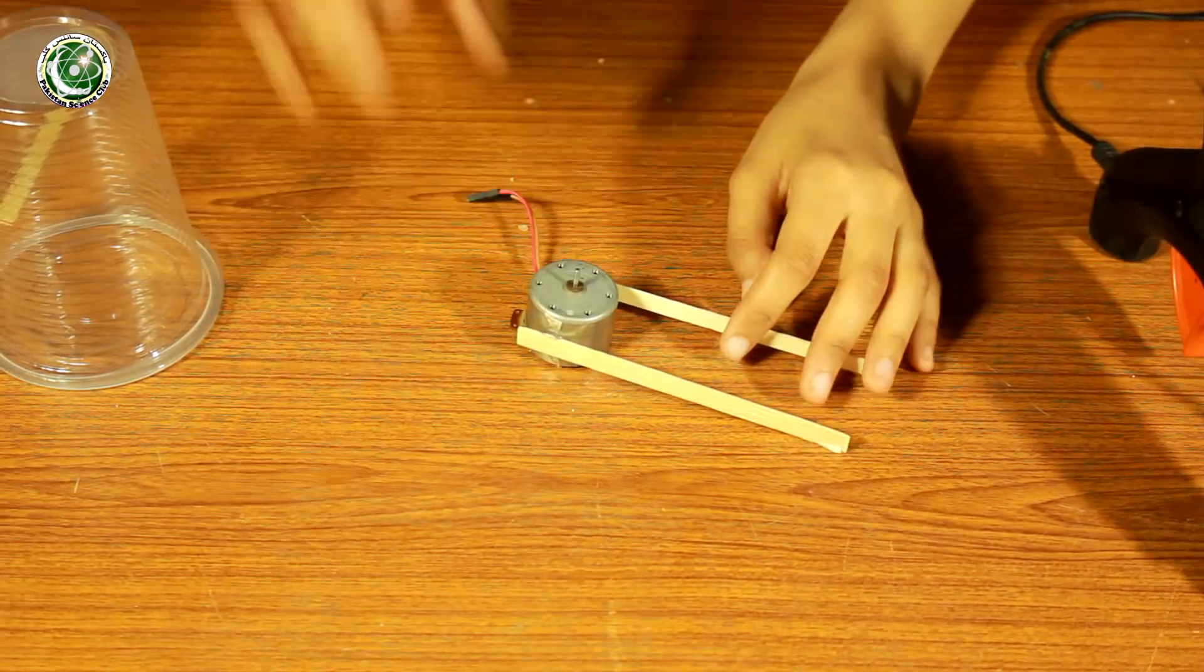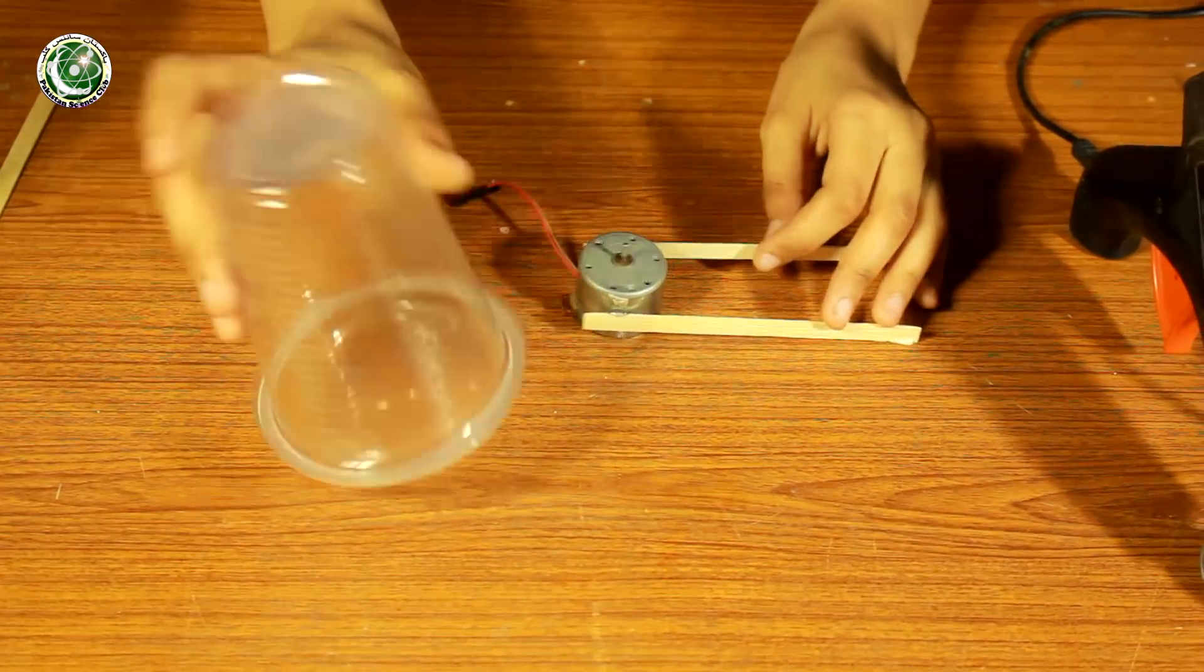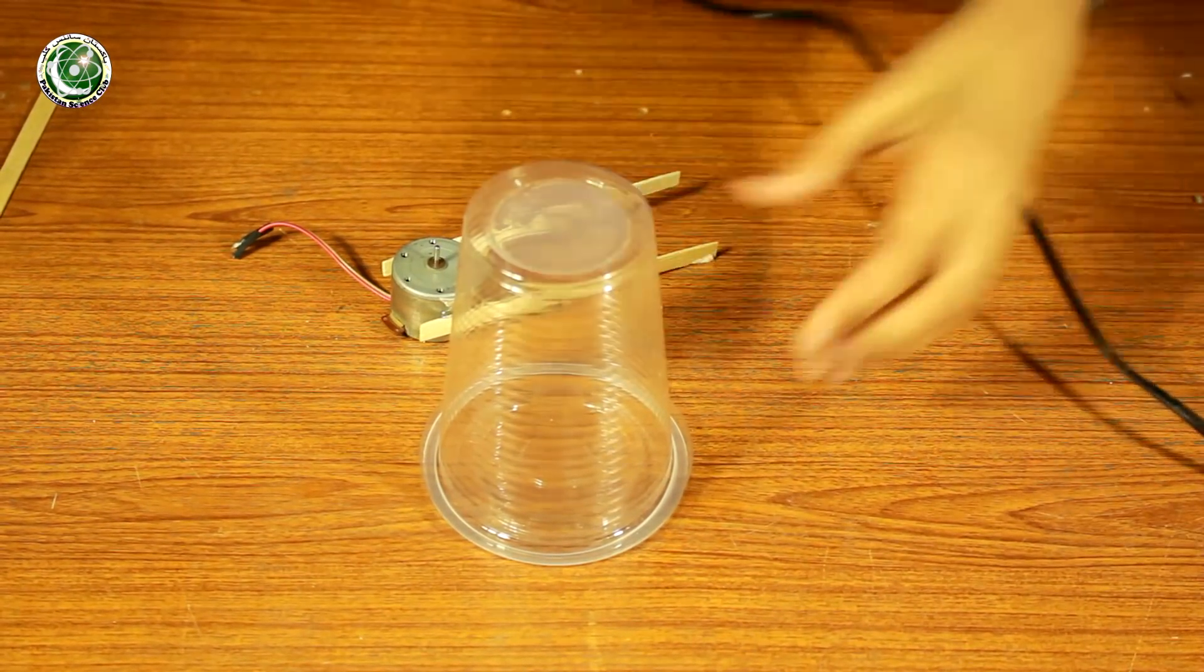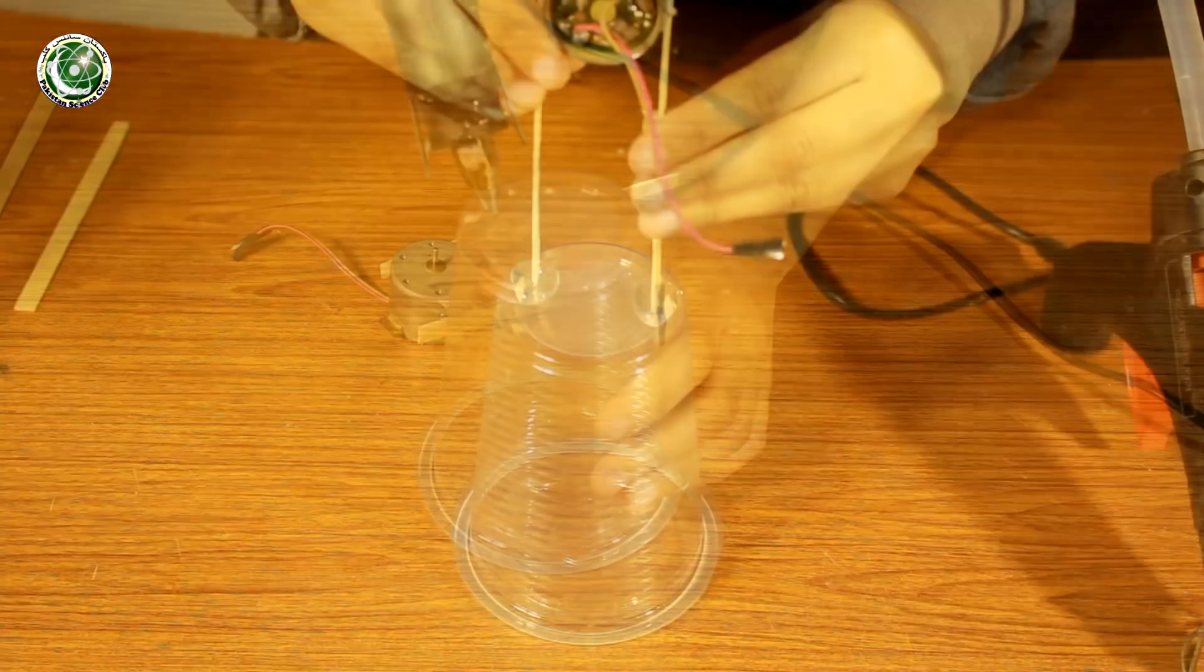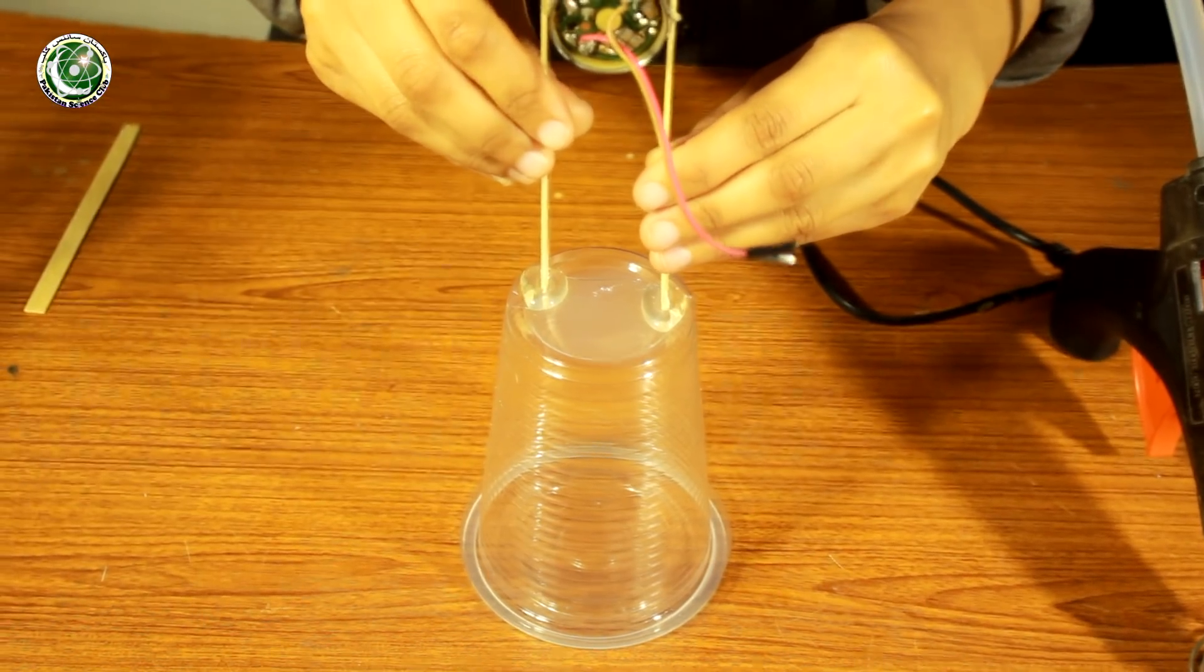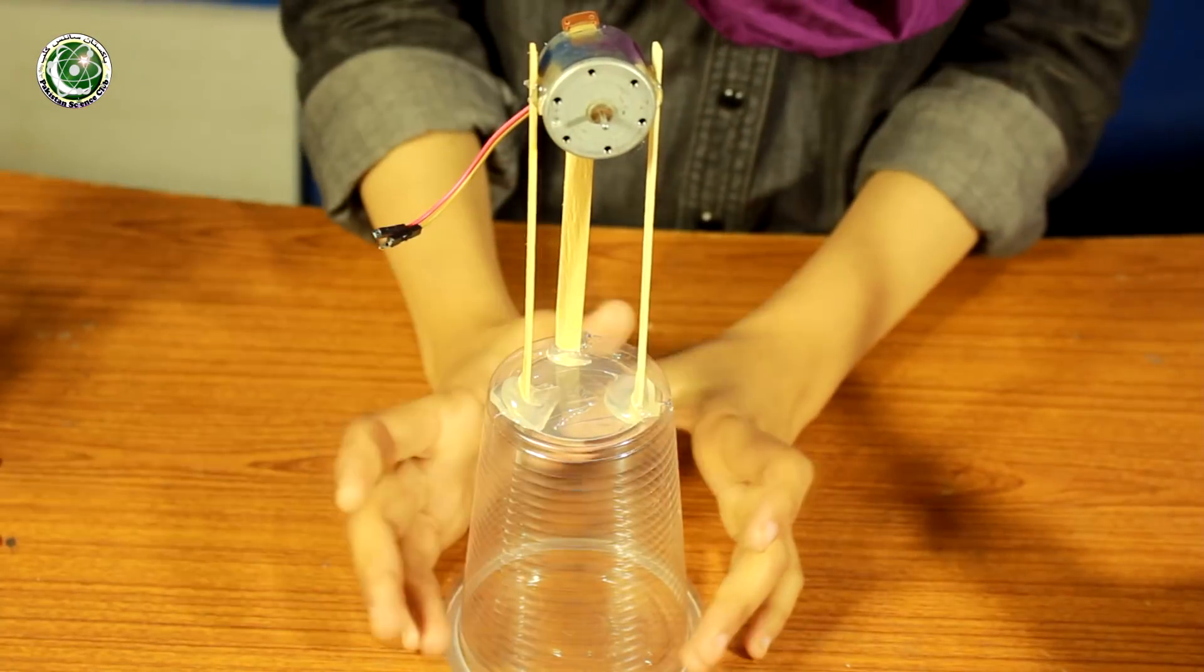Now we will attach the DC motor with the disposable glass. We will use the glue gun again. The tower of the wind turbine is complete.